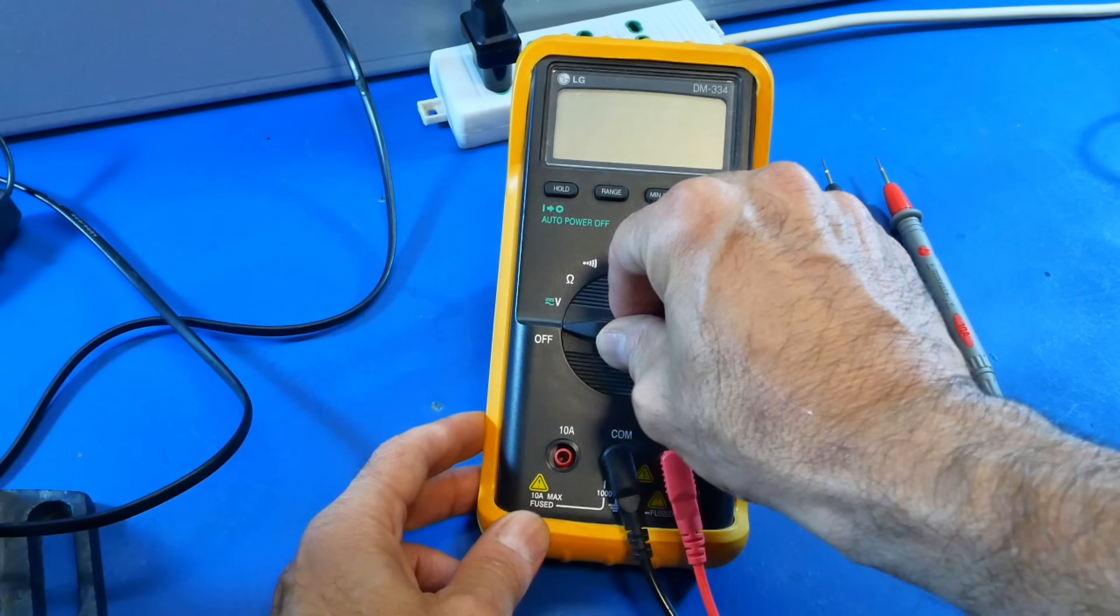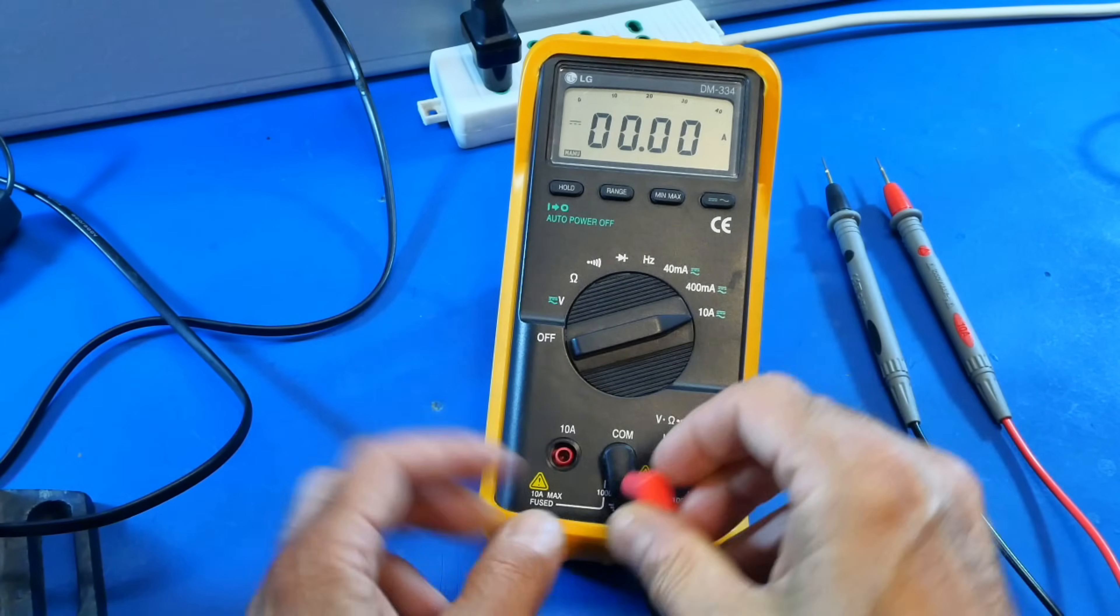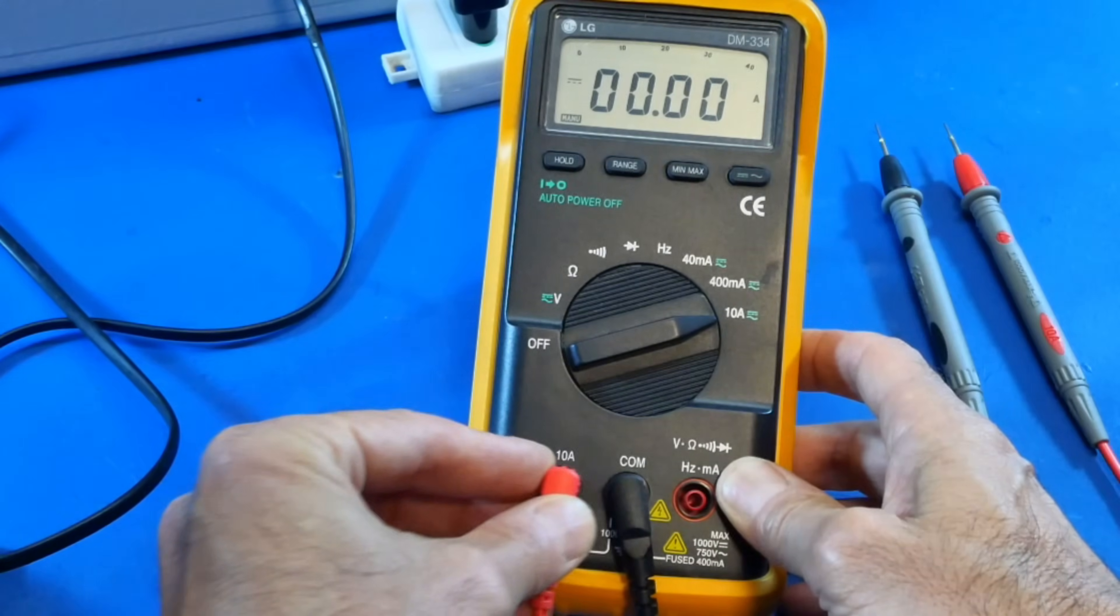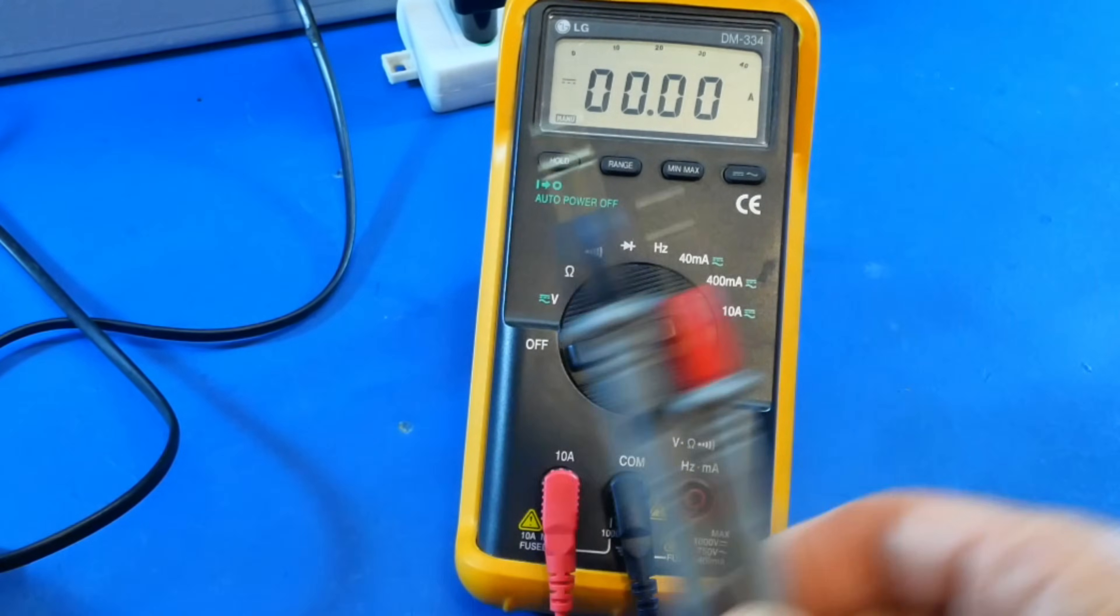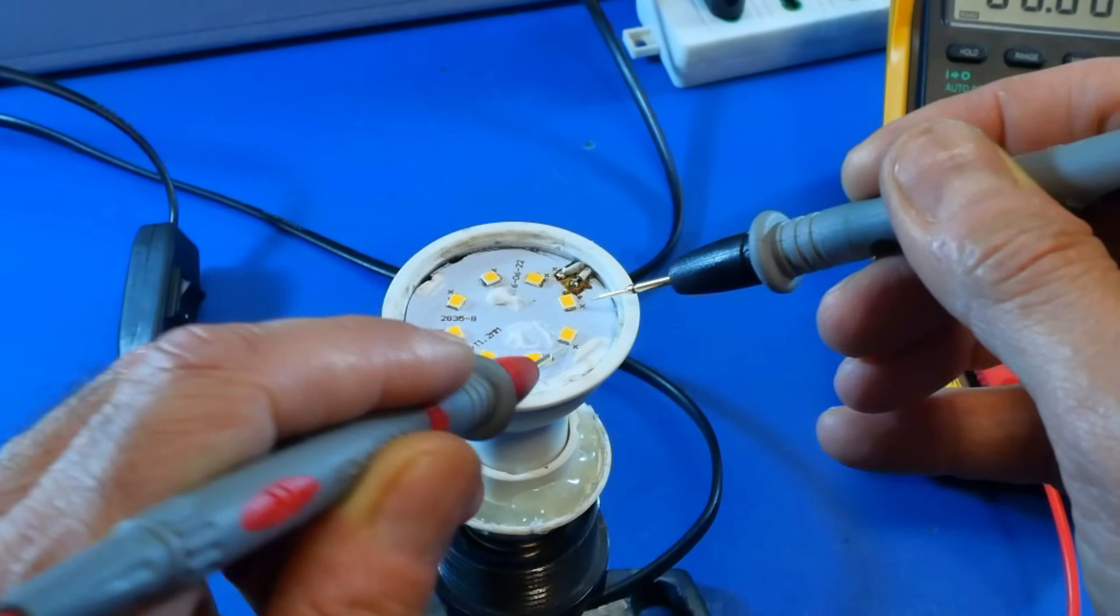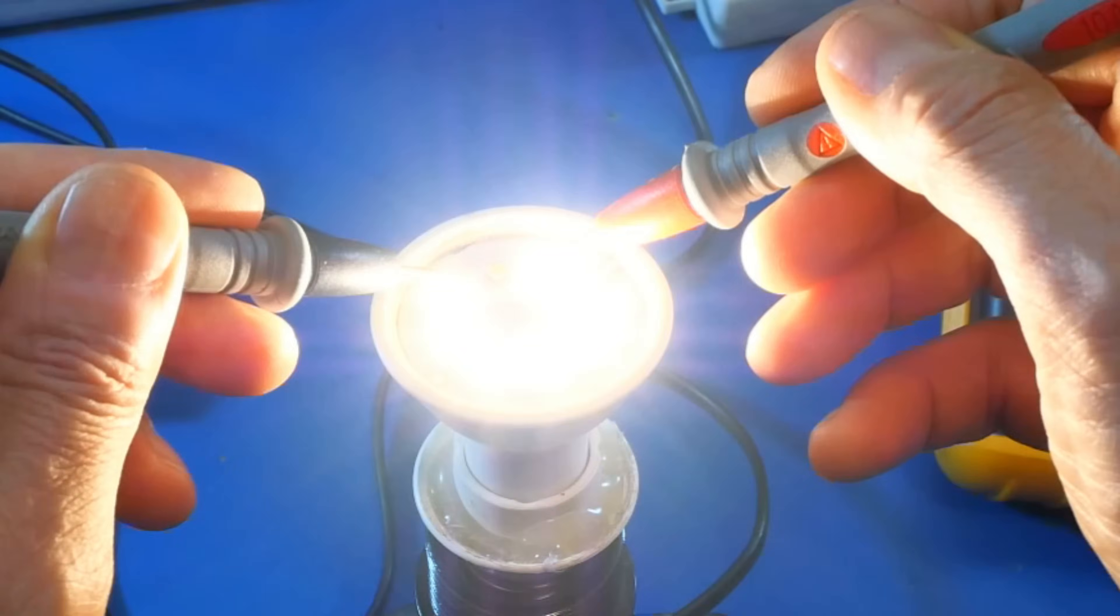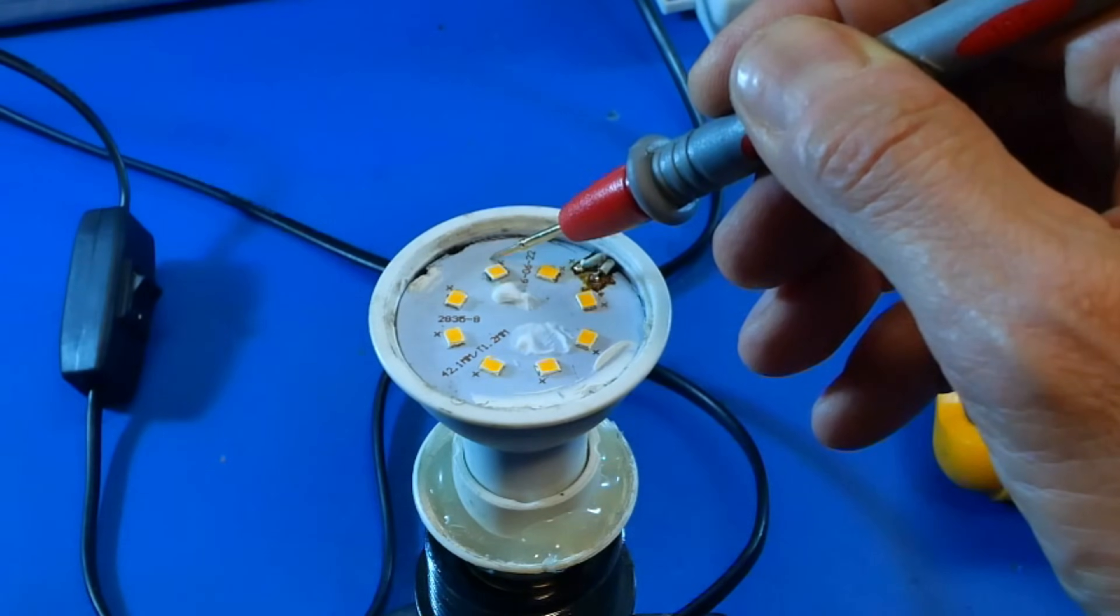We start by checking for the most common problem, that is one or more burned-out LEDs. We select in our multimeter the current measurement scale amps and we test each one of the LEDs and we found the faulty one.